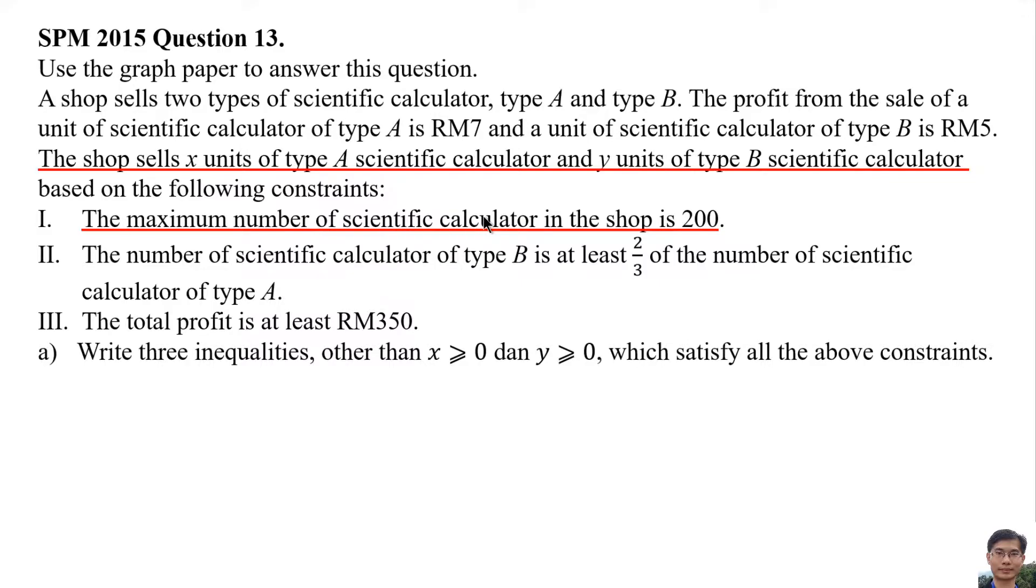Number of scientific calculator means x units of Type A scientific calculator plus y units of Type B scientific calculator. Maximum means less than or equal, 200.